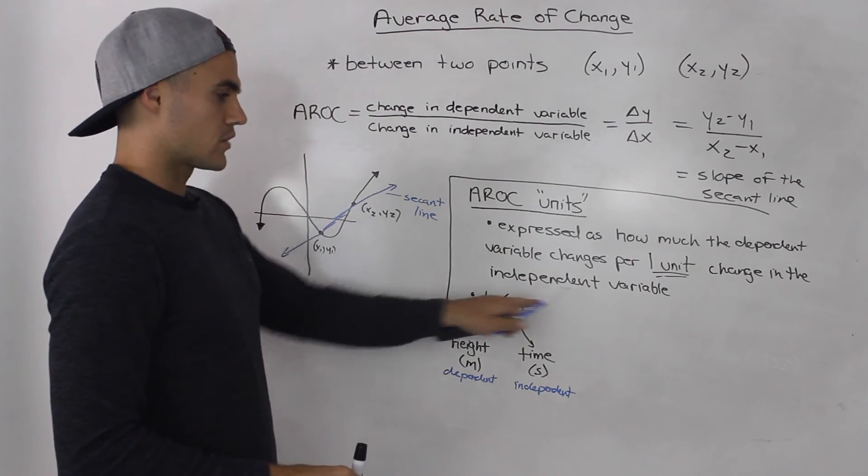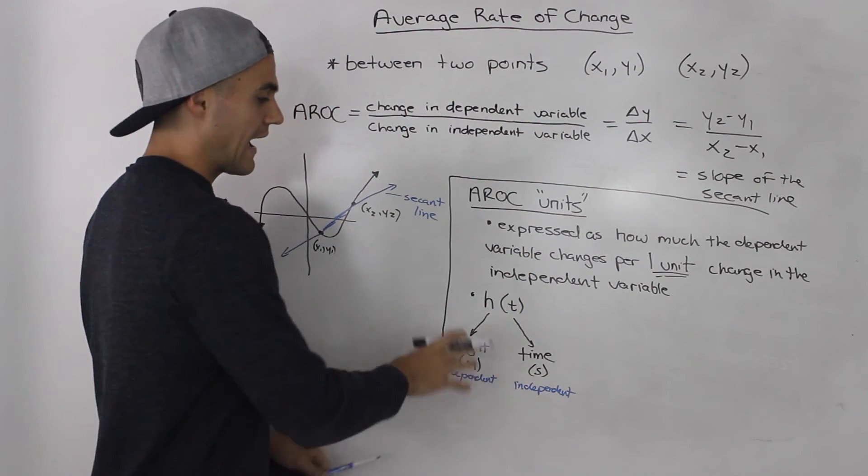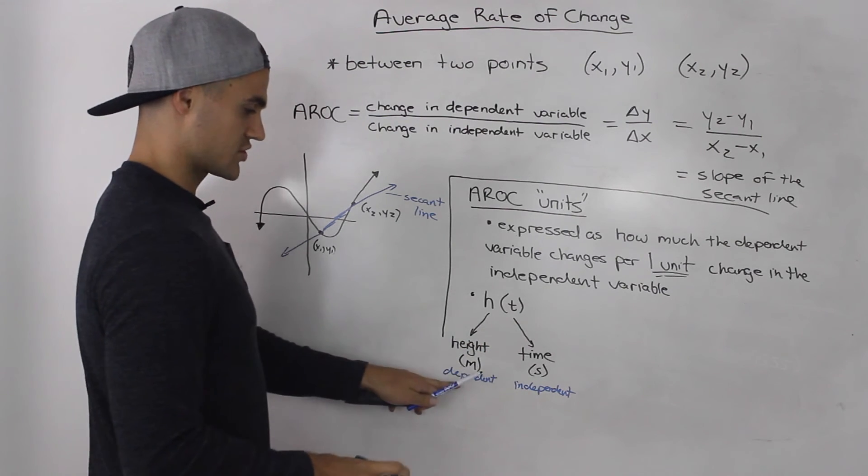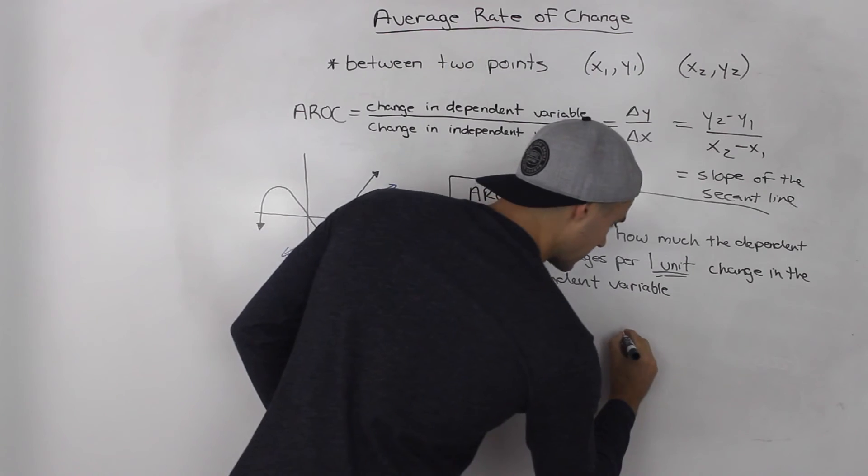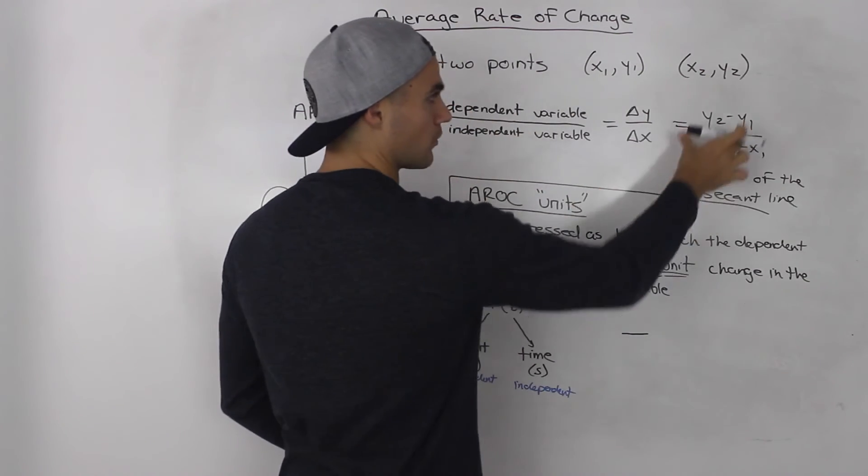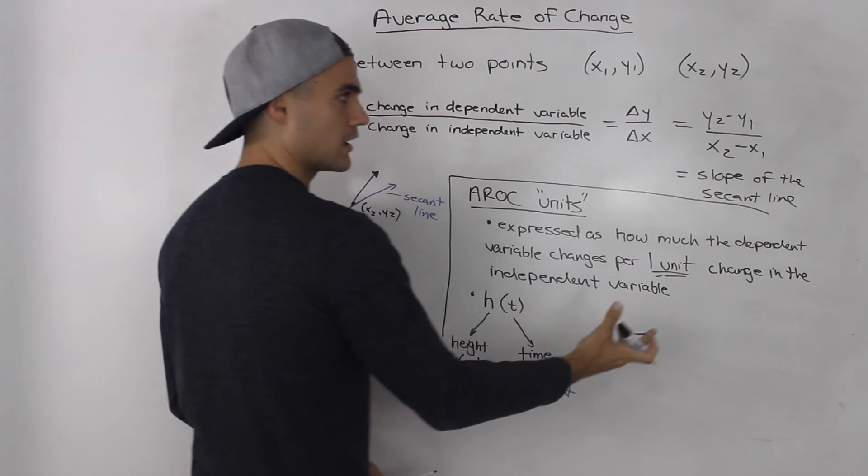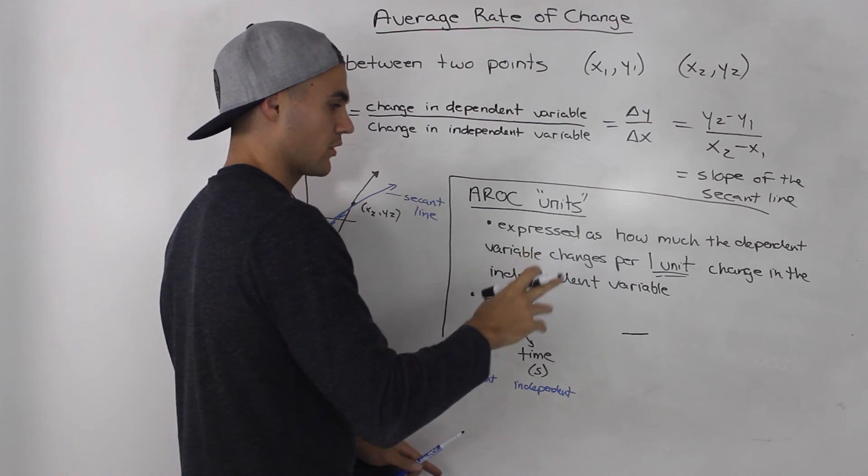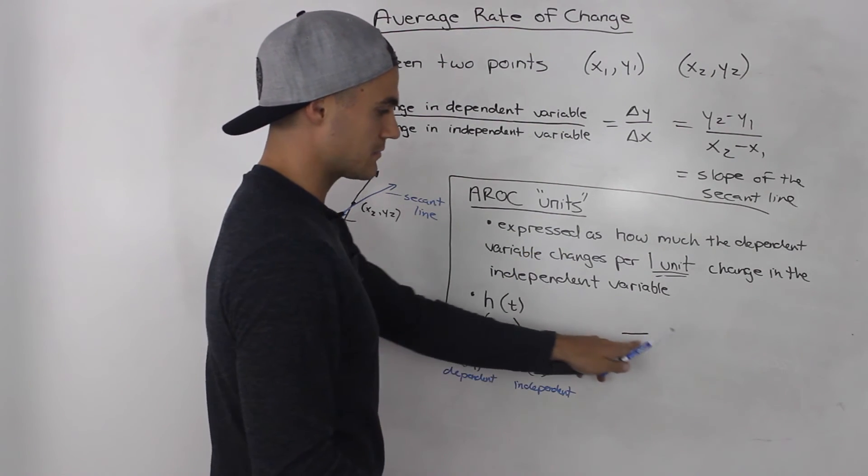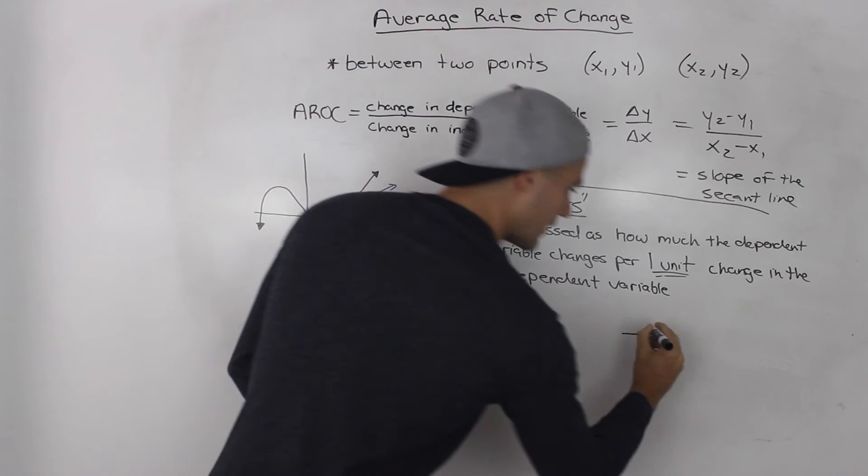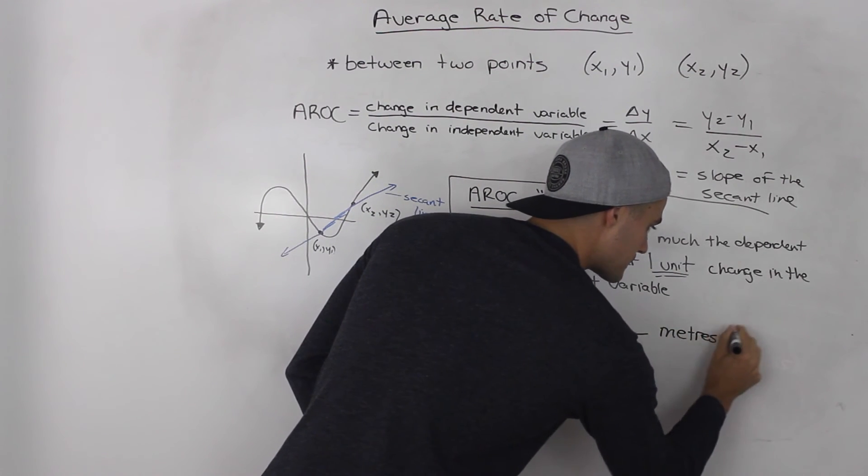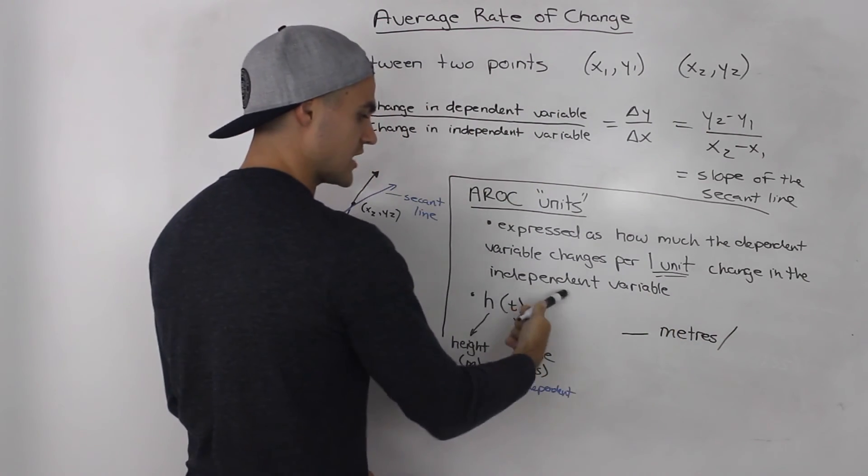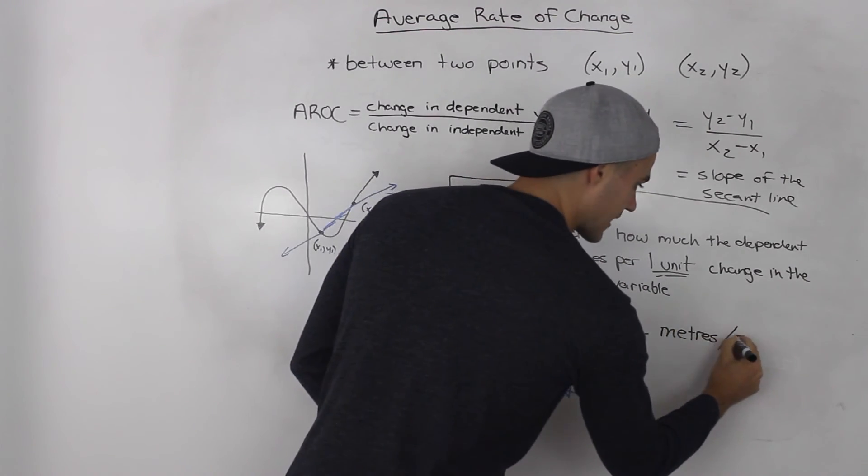Well, if we were given some kind of function and we're finding the average rate of change of the soccer ball, we would get some kind of number when we plug it into this formula, when we find the slope of the secant line between the two points. That number would represent meters per one unit change in the independent variable, per second.